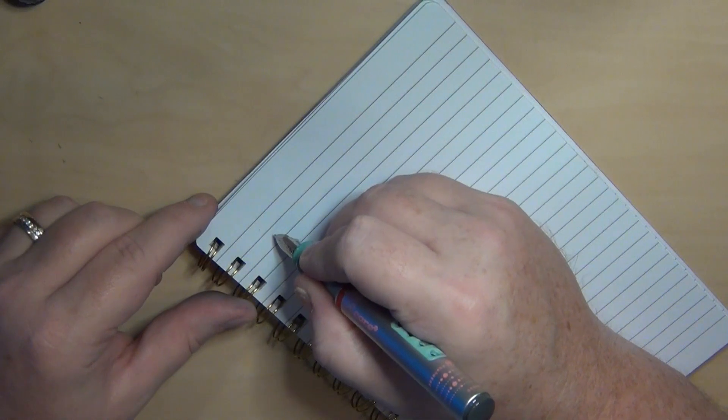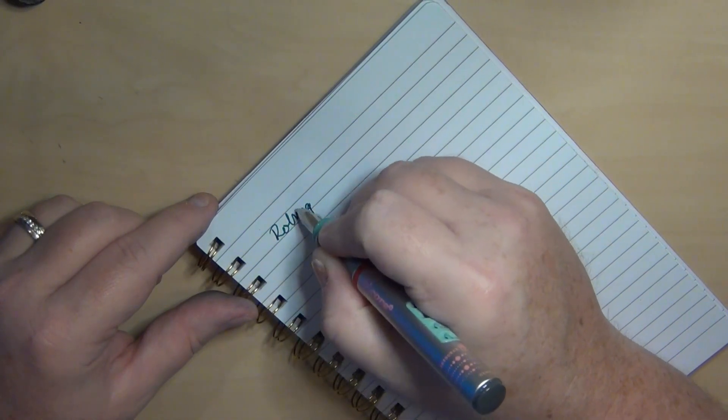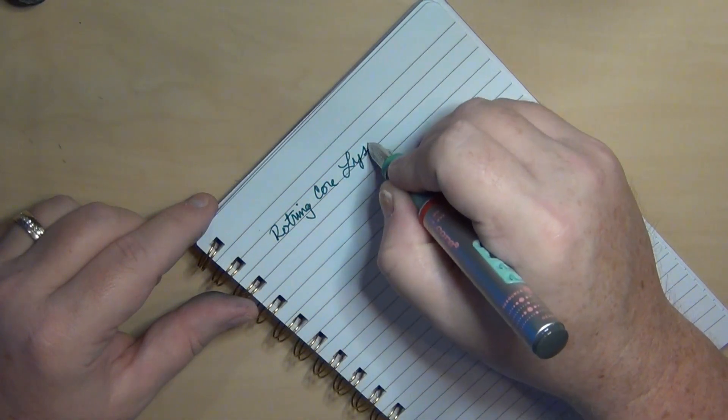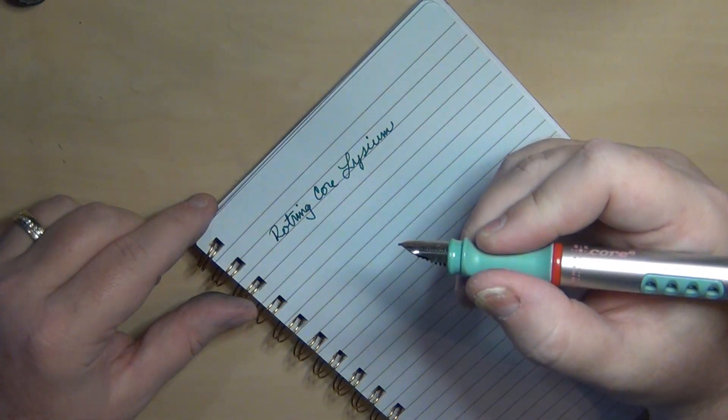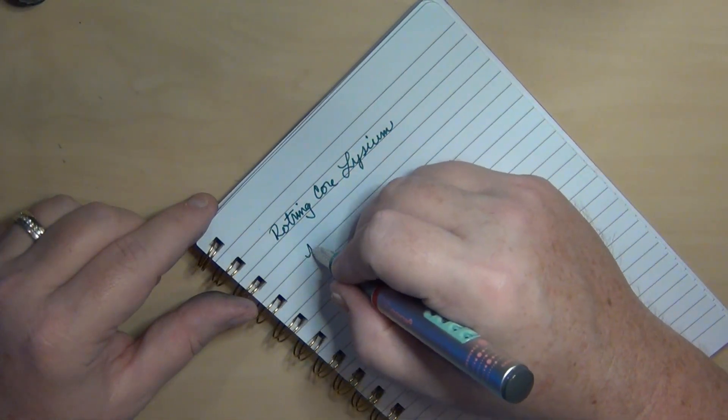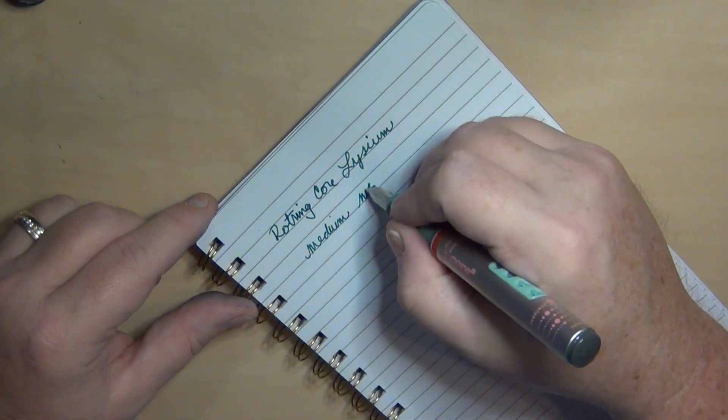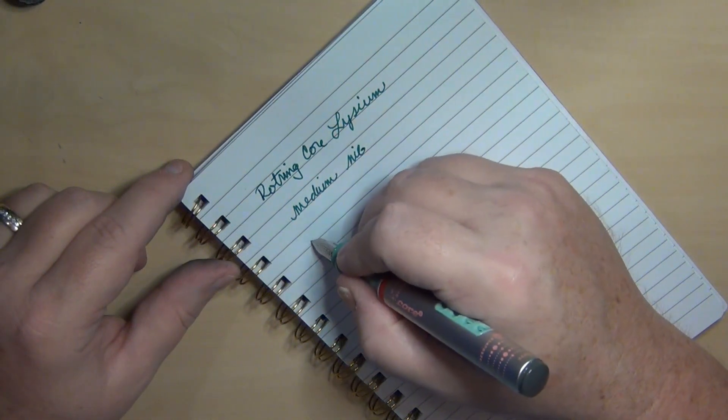So a Rotring Corelysium. This right here is supposed to be more of a medium nib. And believe it or not, I mean, it is kind of a smooth writer.